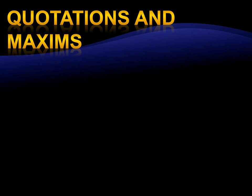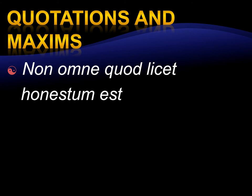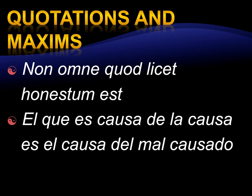Let's look at some quotations and maxims you could use. The first one means: not everything that is legal is ethical or honest. This is normally used in instances where there is doubt whether an act is ethical or not — 'non omne quod licet honestum est.' Then we have one you could use in criminal law, specifically in the area of criminal liability or responsibility: 'El que es causa de la causa es el causa del mal causado' — he who is the cause of the cause is the cause of the evil caused.